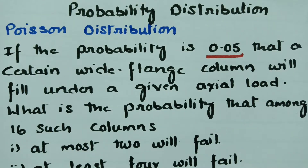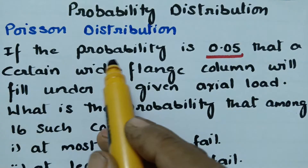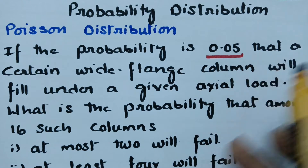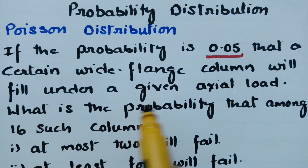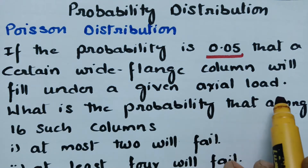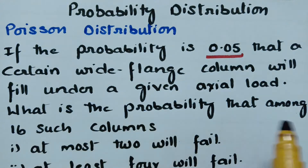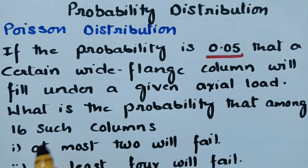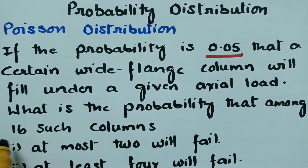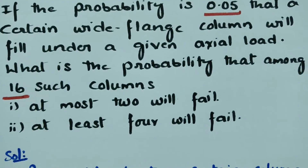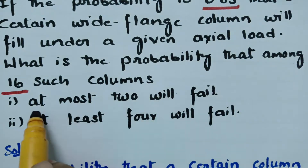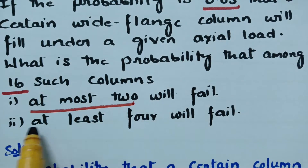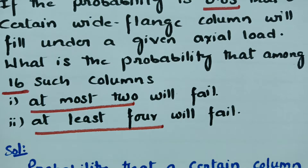This video is on Poisson distribution. In today's video, if the probability is 0.05 that a certain wide flange column will fail under a given action load, what is the probability that among 16 such columns — where n is equal to 16 — at most 2 will fail, and at least 4 will fail?